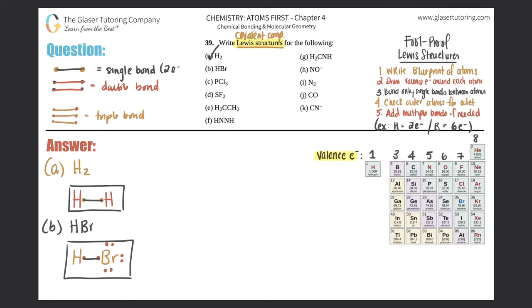Just to note: a single bond is two electrons total shared, a double bond is four electrons, and a triple bond is six electrons.